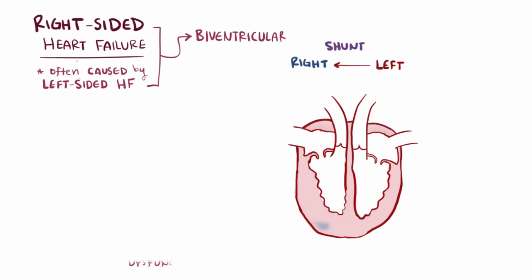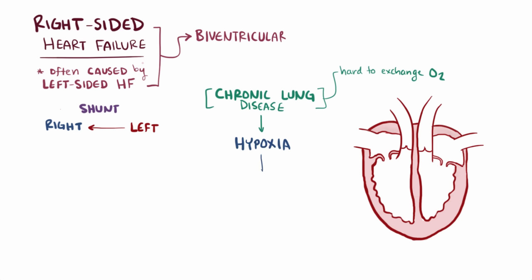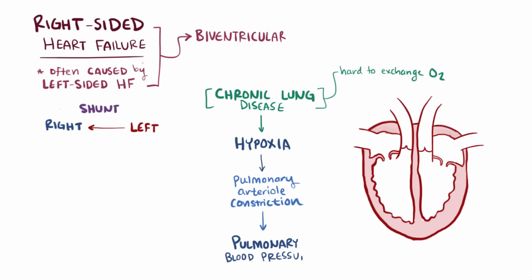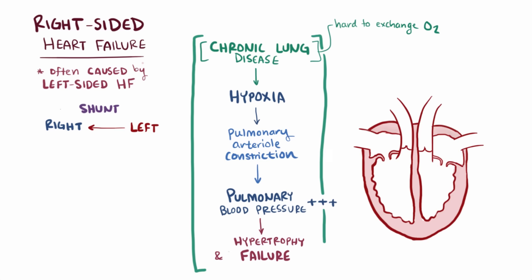Another potential cause of isolated right-sided failure is chronic lung disease. Lung diseases often make it hard to exchange oxygen, and in response to low oxygen levels or hypoxia, pulmonary arterioles constrict, raising pulmonary blood pressure. This makes it harder for the right side of the heart to pump against, leading to right-sided hypertrophy and heart failure. When chronic lung disease leads to right-sided hypertrophy and failure, it's known as cor pulmonale.